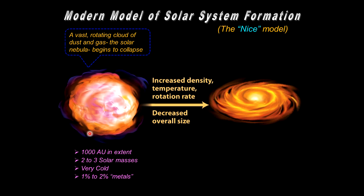And this cloud literally can be 1,000 astronomical units in extent. Keep in mind, the astronomical unit is the average distance between the Earth and the Sun, 93 million miles. So that's really pretty big. Containing about maybe two or three solar masses, the cloud is very cold. Water would freeze.